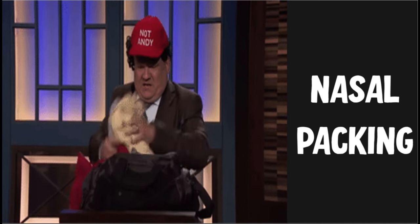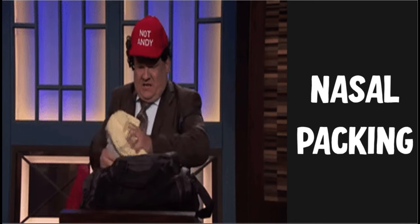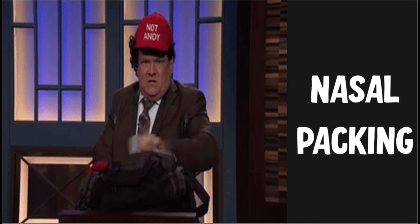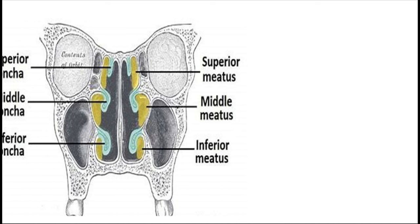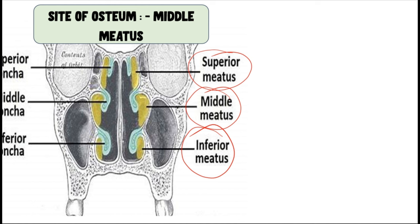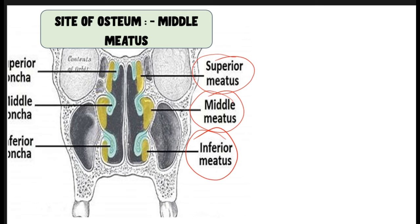Dacryocystorhinostomy is an intricate surgical procedure entailing work with delicate nasal mucosa, making nasal packing a key part of the process. Its purpose is to maintain the tautness of the mucosa and reduce discomfort from pain and bleeding. The nasal mucosa should be sprayed with 10% lignocaine — about one to two puffs — then packed with a solution containing 4% lignocaine or 0.5% xylometazoline. The diagram demonstrates the three meatuses: superior, middle, and inferior. The ostium is formed in the region of the middle meatus, so this area must be properly packed and prepared.